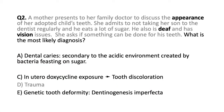As for the other options, dental caries are manifested by local discoloration in areas where bacteria have led to significant tooth erosion. In utero doxycycline exposure can cause tooth discoloration. Genetic tooth deformity, like osteogenesis imperfecta or dentinogenesis imperfecta, would result in opalescent teeth rather than malformed teeth.